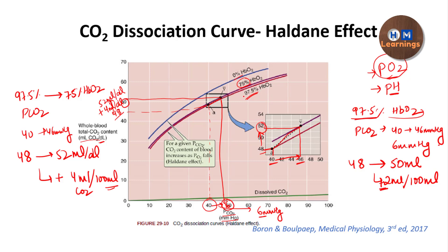You can see that decreasing the saturation of hemoglobin with oxygen causes a leftward shift of the carbon dioxide dissociation curve. This means that with the same change in pCO2, the total content of carbon dioxide in the blood increases more — and that is what is called the Haldane effect. The Haldane effect states that if you have more pO2, the carbon dioxide content in the blood will be less, and if you have less pO2, the carbon dioxide content in the blood will be more.